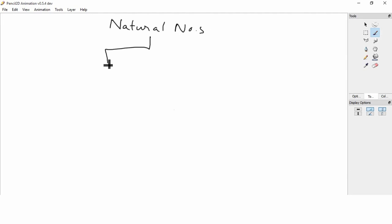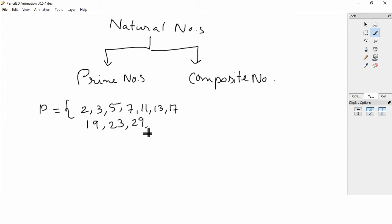In natural numbers, we can do two basic classifications. First one is prime numbers, and second one is composite numbers. So prime numbers, which numbers are those? Those numbers which are just in their own table or only divisible by 1 and themselves. We call it prime number, for example 2, 3, 5, 7, 11, 13, 17, 19, 23, 29, 31, 37, 41, 43 and so on.